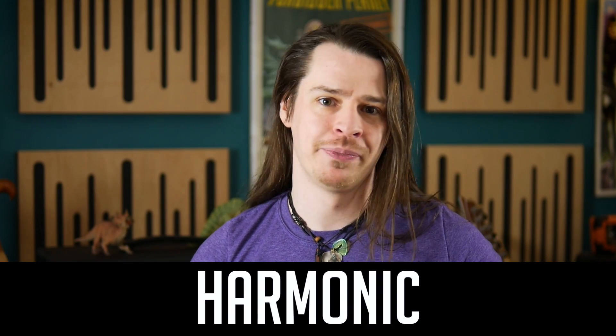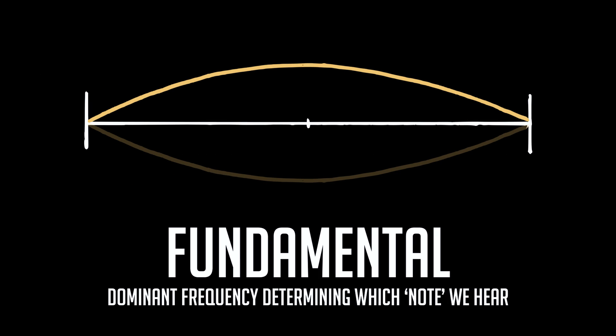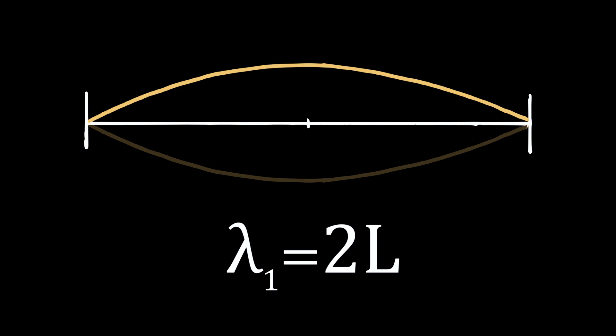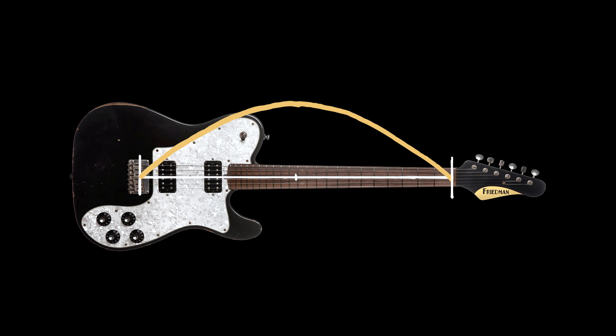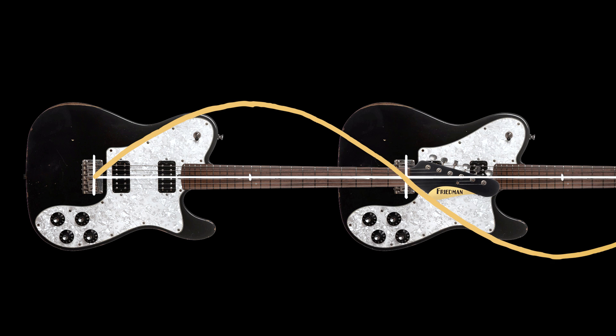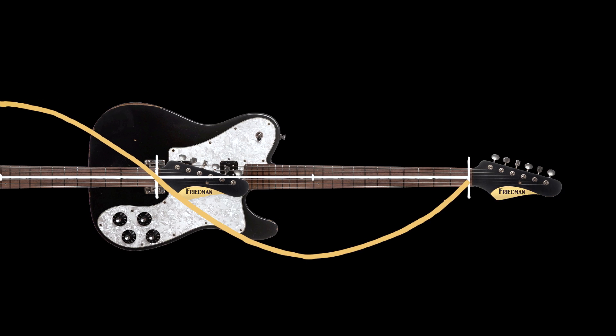Each of the possible examples is a mode of vibration, or a harmonic. The simplest, which looks like this, is called the fundamental, and has wavelength 2L — that is, it would take two scale lengths for the wave to get back to its starting point.